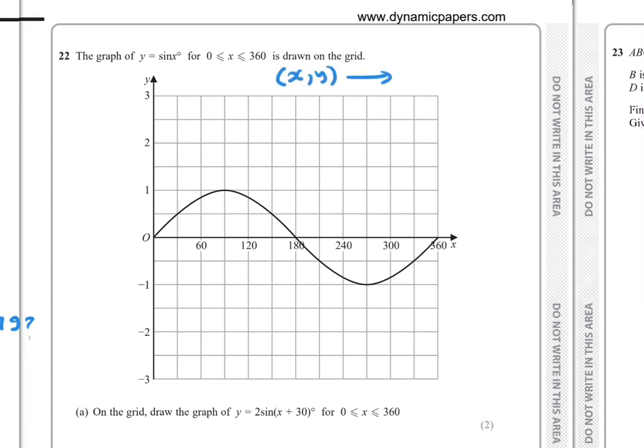Because we have vertical stretch scale factor 2, y will become 2y. And because we have translation 30 to the left, x will be x minus 30. So now we can find the image for the points by this rule.